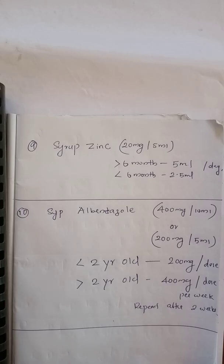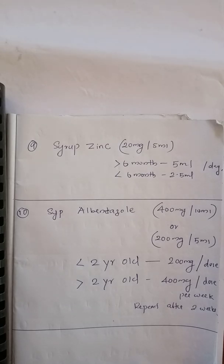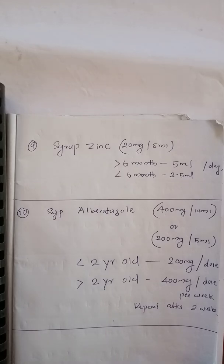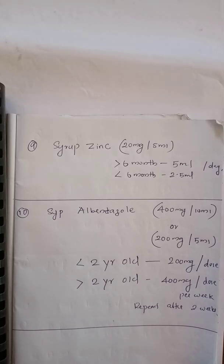Next: syrup albendazole, available in 400 mg per 10 ml or 200 mg per 5 ml strength. For less than 2 years old, give 200 mg per dose per week; for more than 2 years old, give 400 mg per dose per week. Repeat the same dosage after 2 weeks. If a child is less than 2 years and only 400 mg per 10 ml is available, give 5 ml: 200 mg ÷ 400 mg × 10 ml = 5 ml per dose.